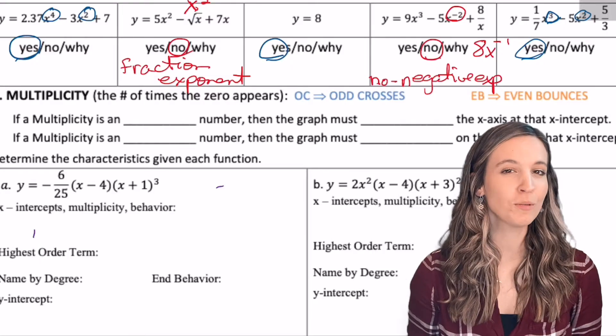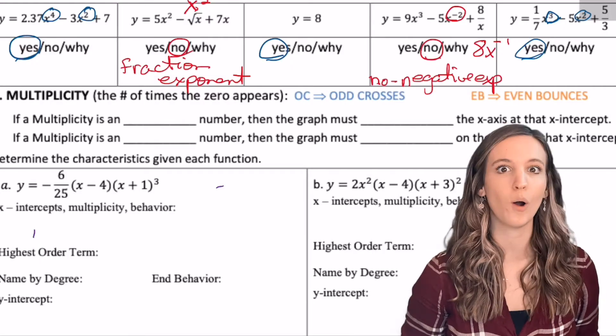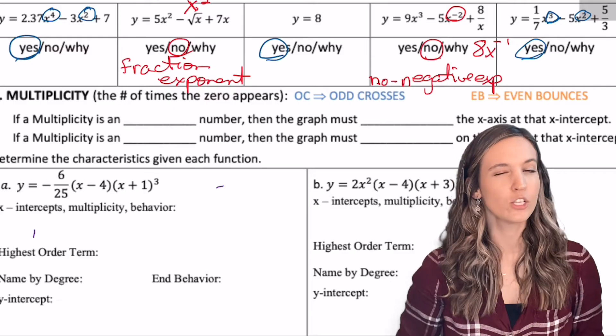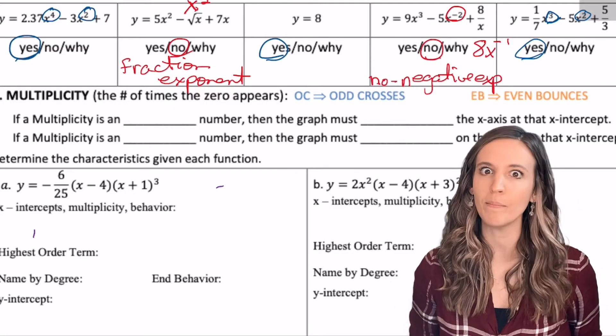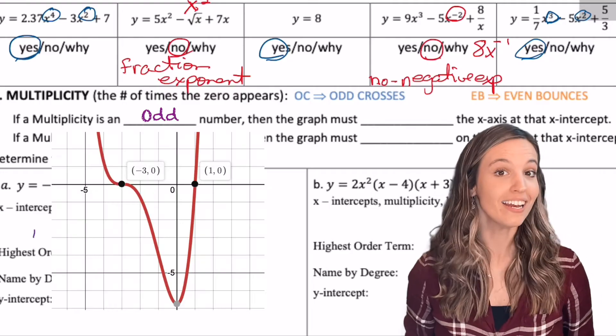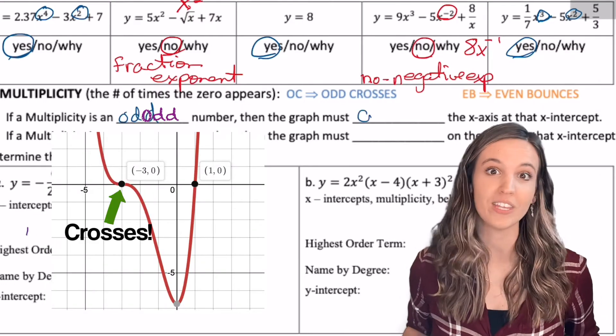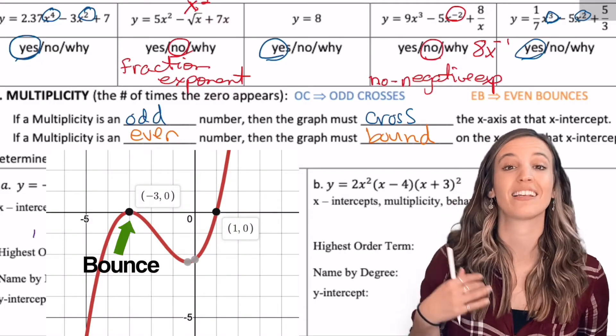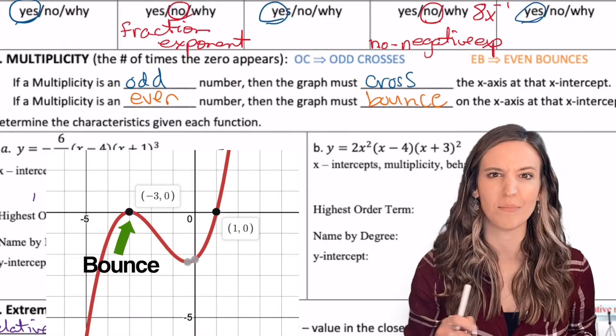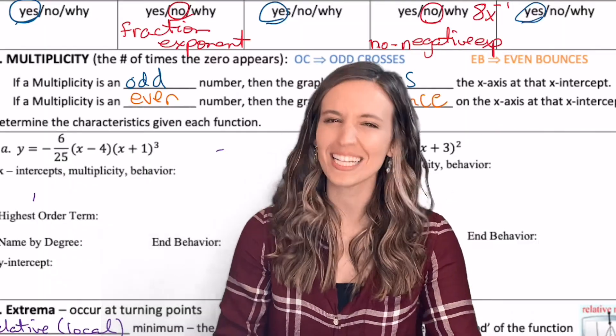Next, multiplicity. Multiplicity is the number of times a zero appears. Multiplicity actually influences our graph of polynomials quite a bit. If the multiplicity is odd, then the graph will cross through the x-intercept. If the multiplicity is even, then the graph will actually bounce off the x-axis at that x-intercept. How weird is that? Let's practice.